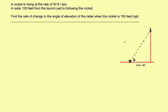Let's go ahead and label what we know and what we don't know. I'm going to put variables on this. The horizontal distance will be x, and the vertical distance will be y. The rate at which the rocket is rising is 50 feet per second — that's the rate at which y is changing, so dy/dt = 50 feet per second. Now x is a constant, and what the question is asking is the rate at which the angle is changing: dθ/dt.